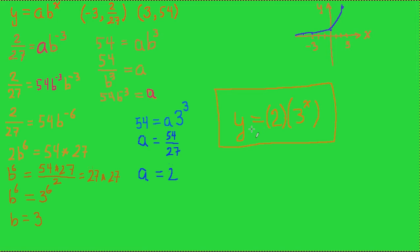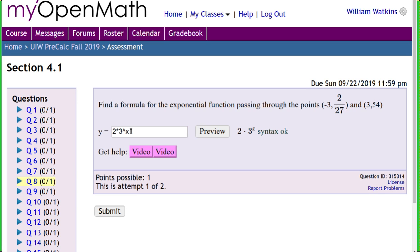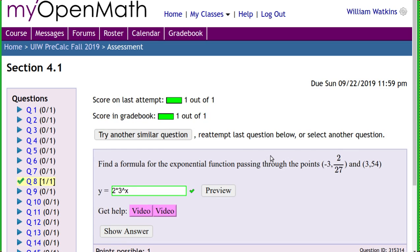There we have it. Our exponential equation is going to be y is equal to 2 times 3 to the x power. So we can enter that 2 times 3 raised to the x power and it checks the syntax for us. Make sure that we've got that written the way that we want it to. And of course we can check that value and sure enough it agrees with the answer key.